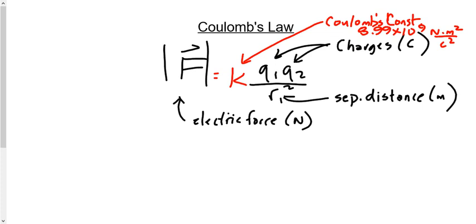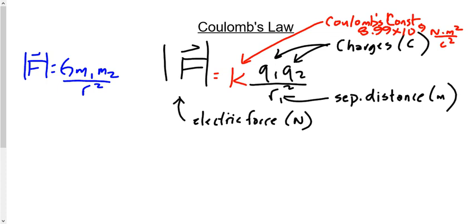Before we finished yesterday, I asked: does this remind you of anything from Physics 20? It's Newton's law of universal gravitation, which gives us the force of gravity between two masses a certain distance apart — not the electric force between two charges, but they're very analogous. F is gravitational force, M1 and M2 are the masses, R is the separation distance, and G is the gravitational constant.